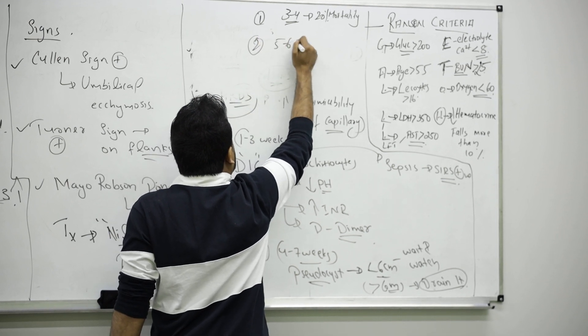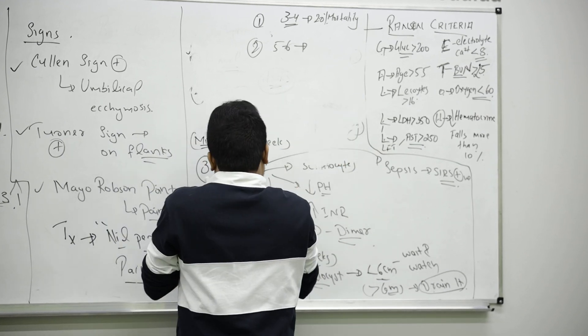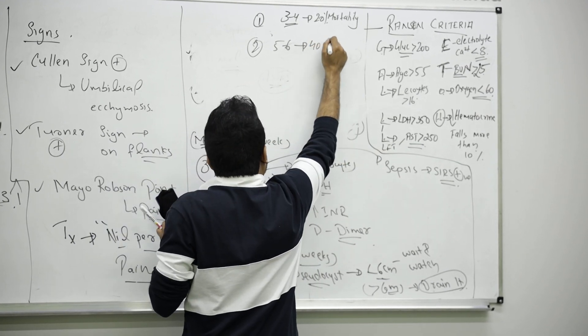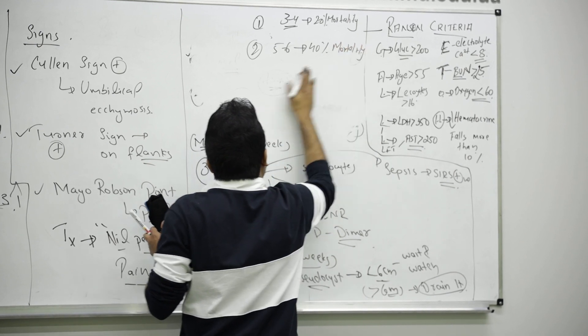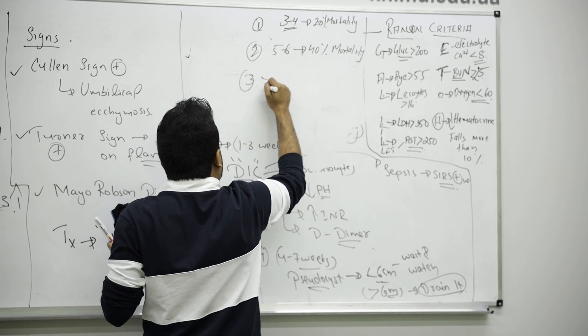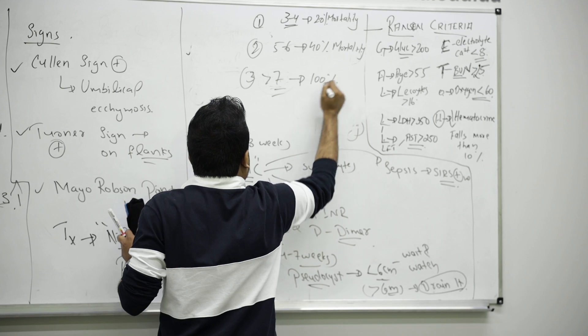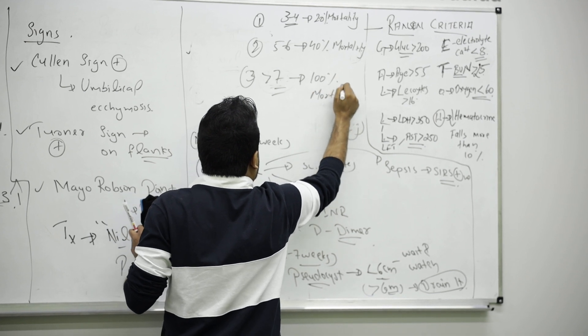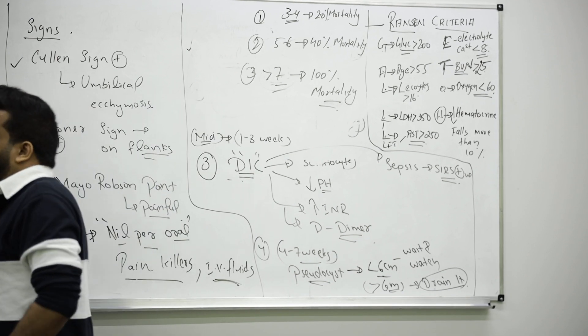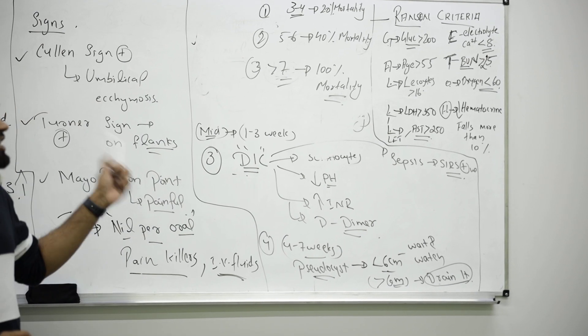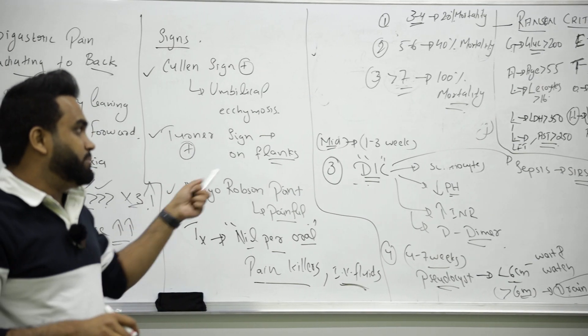If the point is between 5 to 6, it means the patient have a mortality rate of around 40%. If Ranson's criteria point is more than 7, it means the patient is going to die, 100% mortality. That will make sure how to treat the patient in ICU or how you manage the patient. The severity of pancreatitis can be noted by the Ransom's criteria.